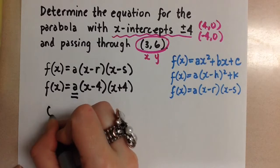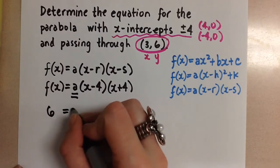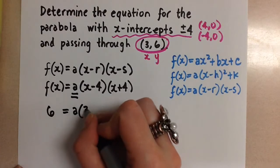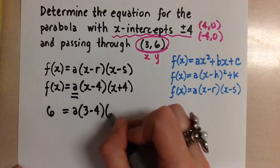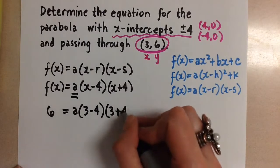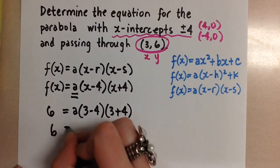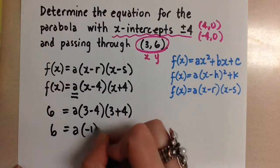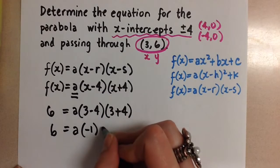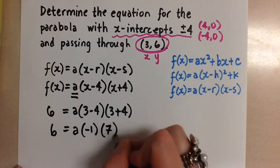So here we're going to have a 6 equals a 3 minus 4 and 3 plus 4. So when we evaluate this, 3 minus 4 is negative 1 and 3 plus 4 is 7.